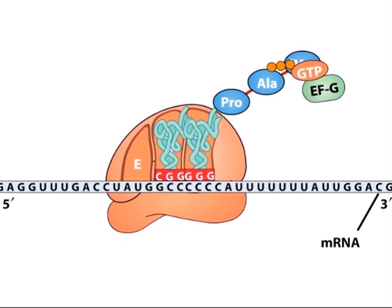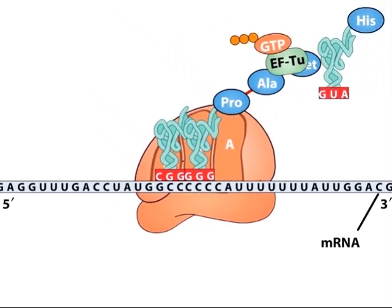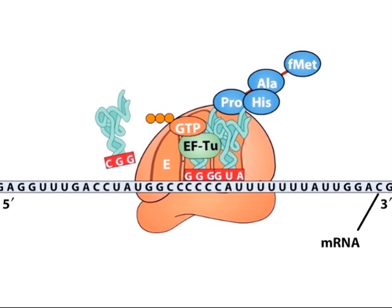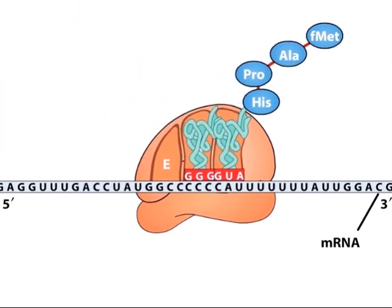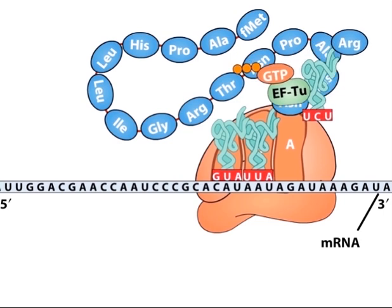Elongation of the polypeptide chain continues until a termination codon is translocated into the A site of the ribosome. Cells do not contain tRNAs with anticodons complementary to termination codons.